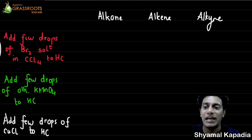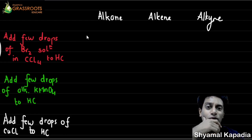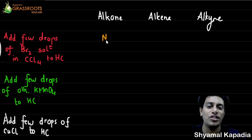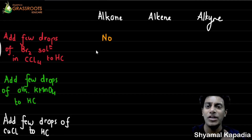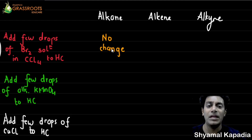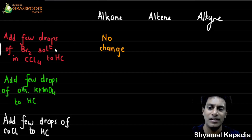First, if I add a few drops of bromine solution in carbon tetrachloride to alkane, no change is observed — bromine, which is reddish-brown, remains reddish-brown. If you add bromine in carbon tetrachloride to alkene, the reddish-brown color of bromine decolorizes.